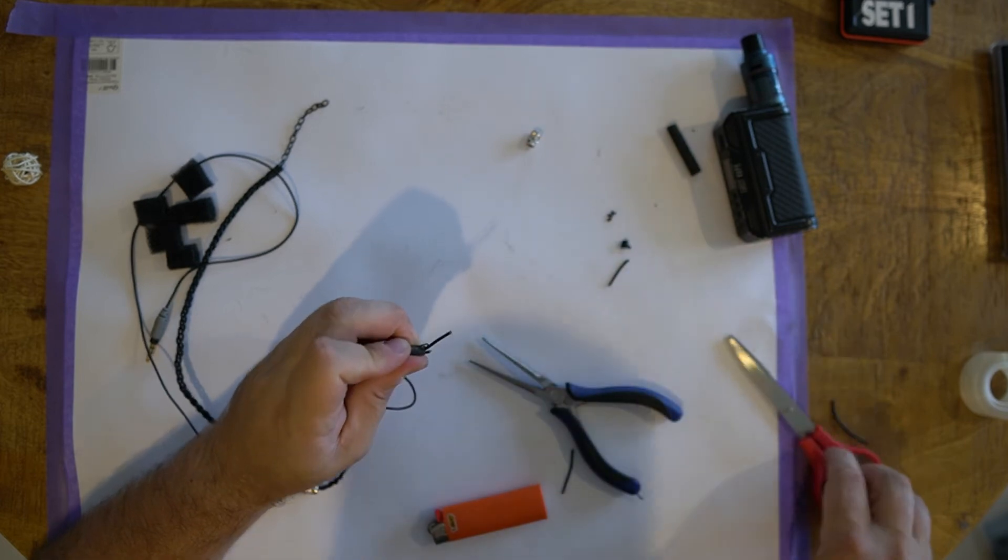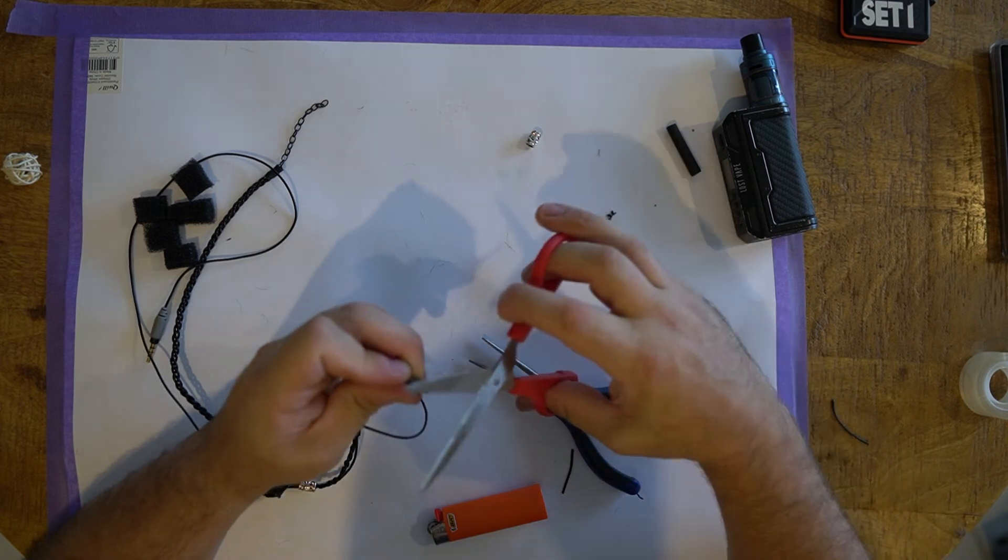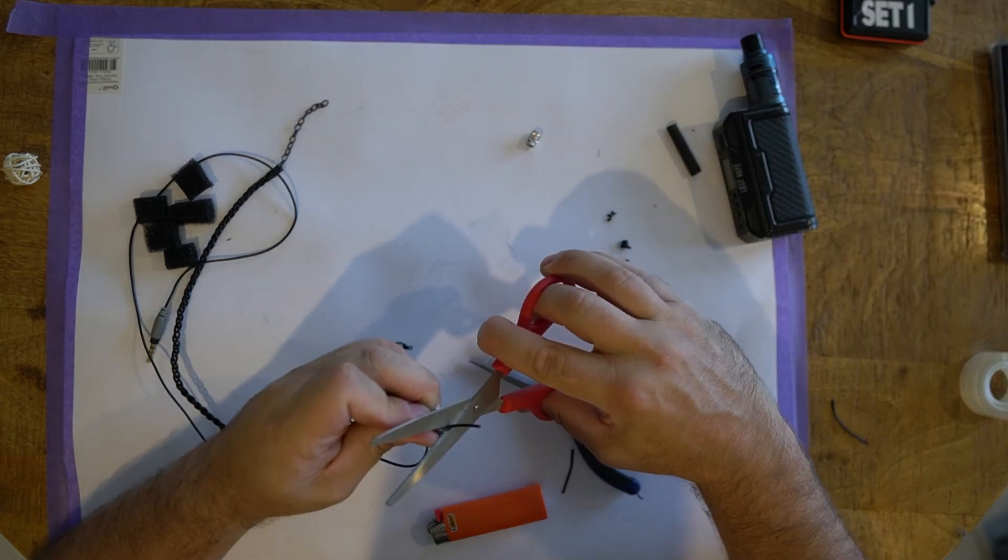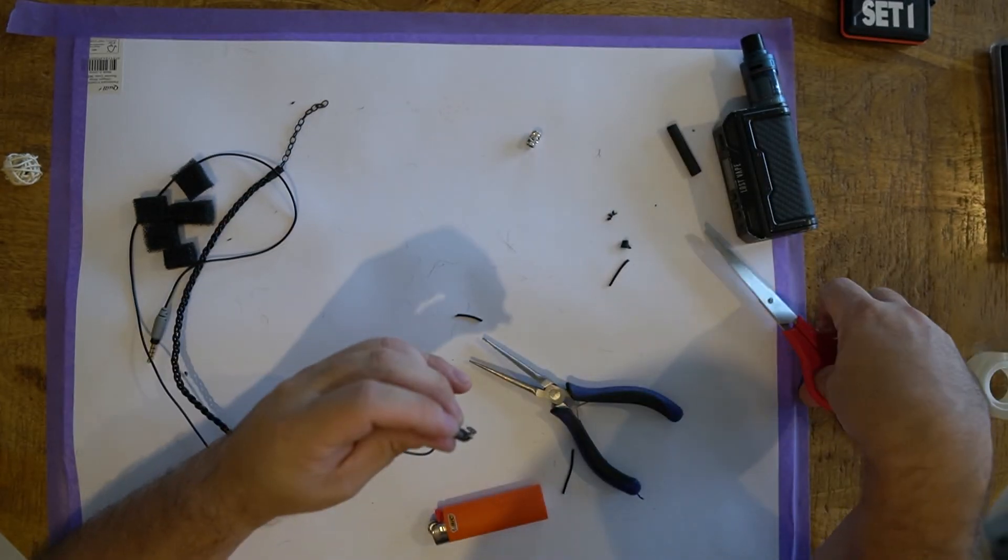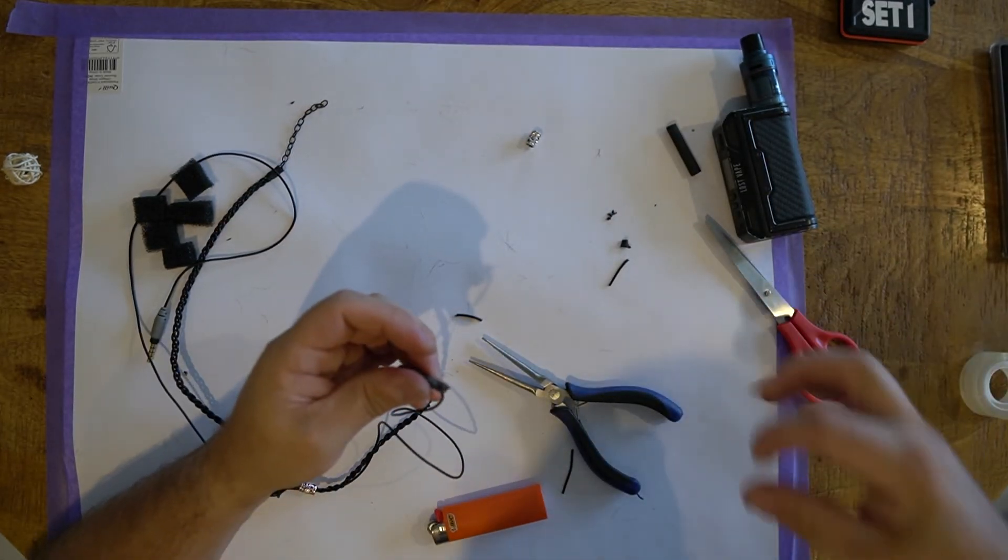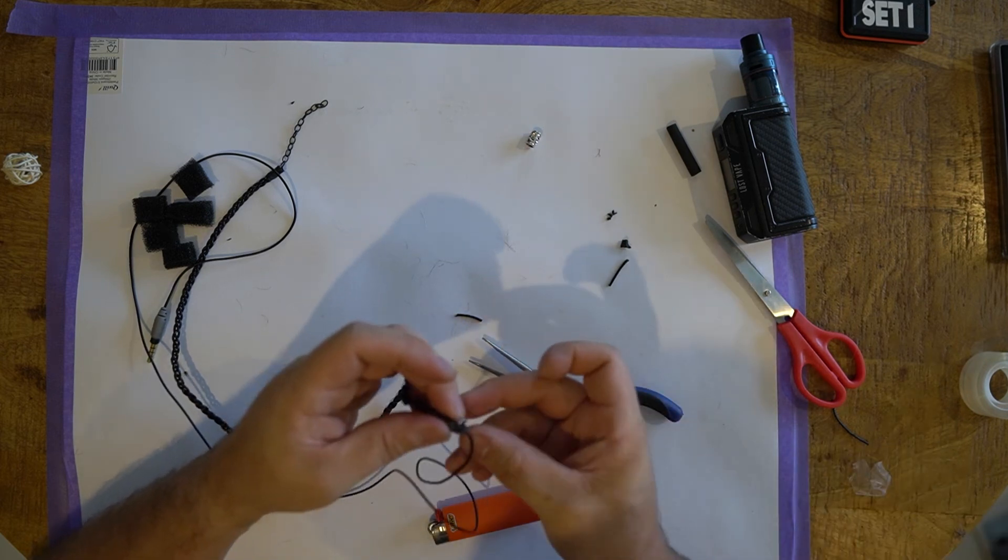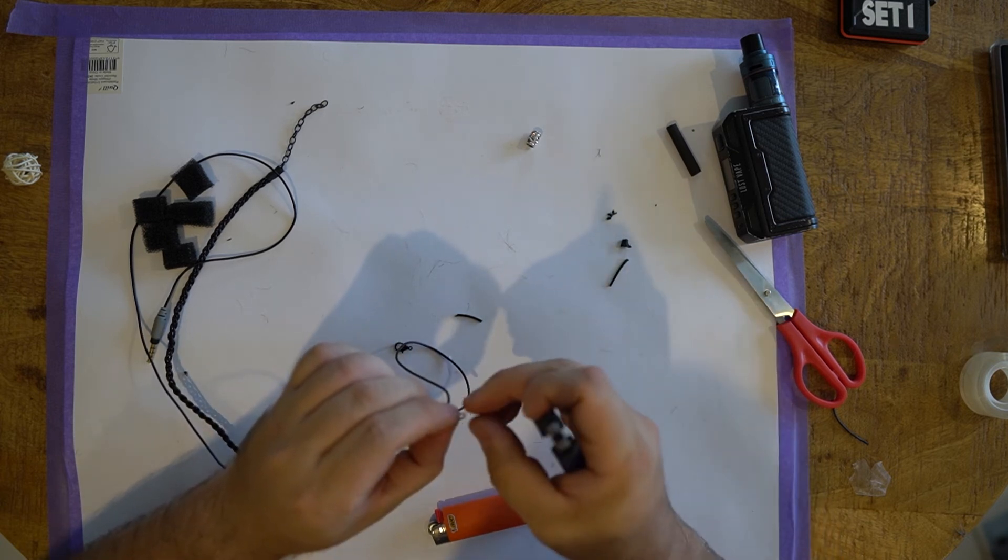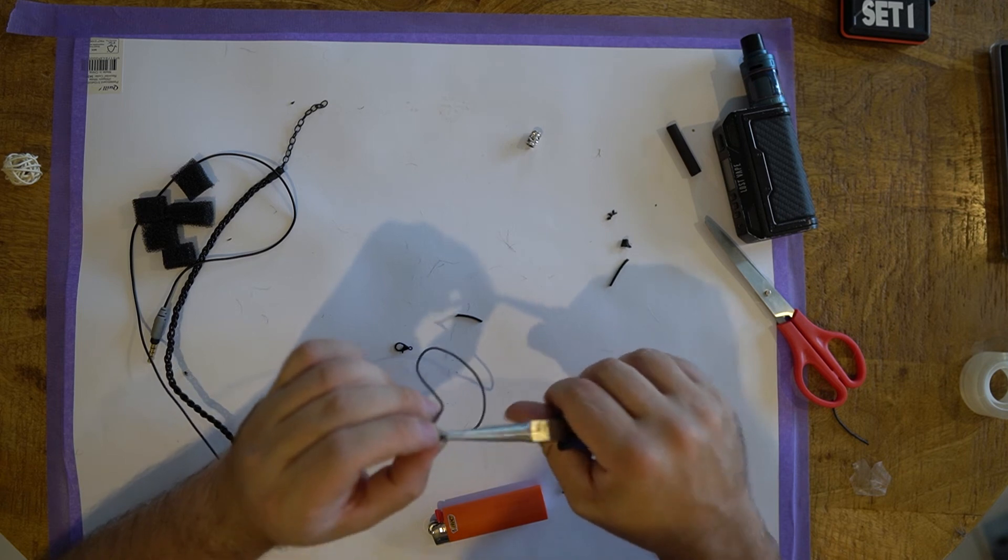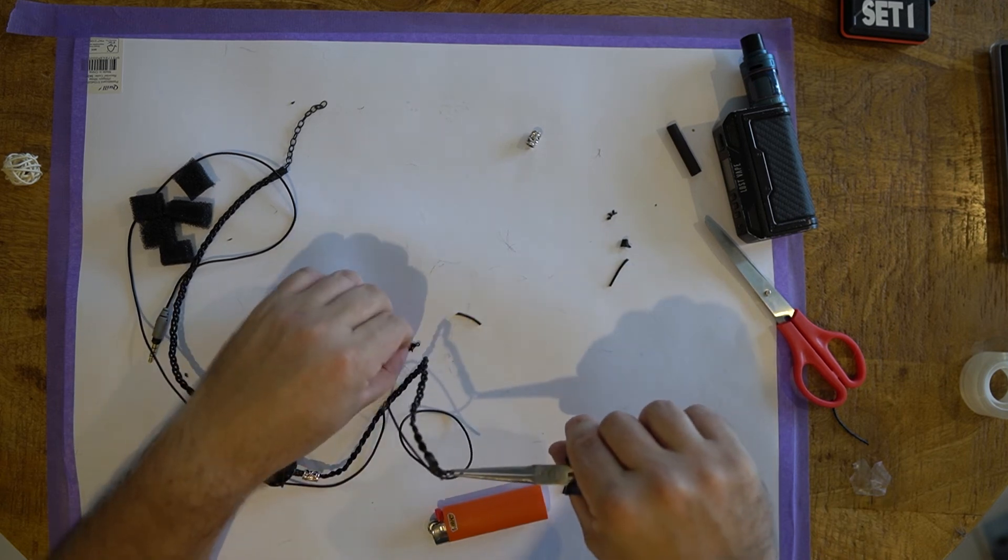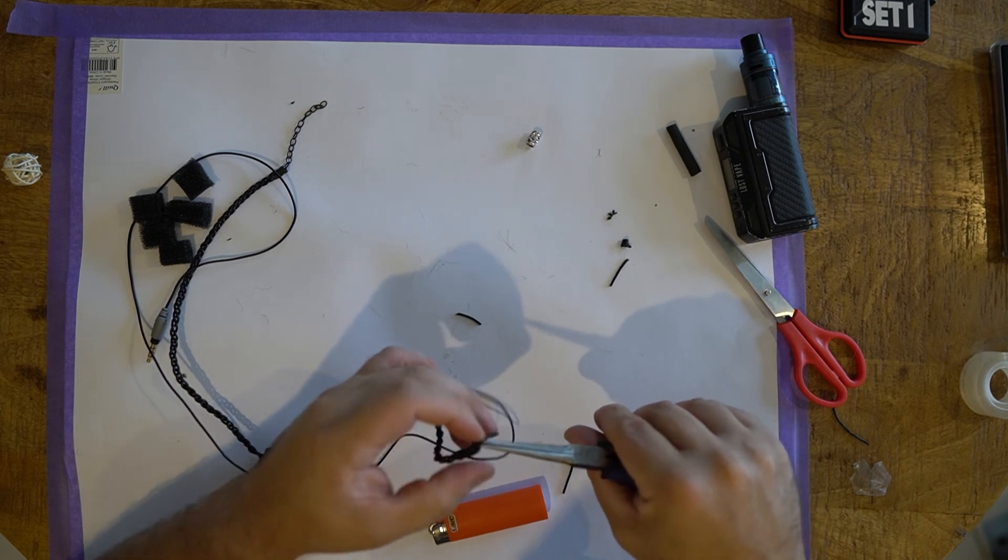We've just got a couple of unsightly tag ends there. If you've got a long tag end, just be really careful you don't trim your lav wire because that would be kind of game over. And then we just open that up ever so slightly and pop the clasp back in.